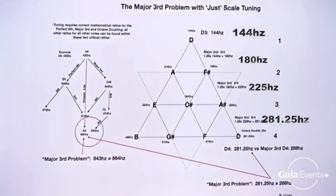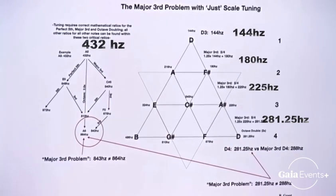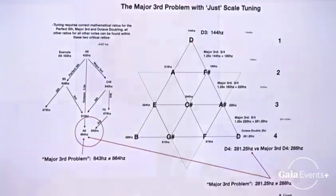How do we double the octave? This is the problem. If you continue this on, instead of going from 432 hertz, you'll end up at 843 hertz instead of 864 hertz. And you can see that this problem gets compounded the farther out you go.